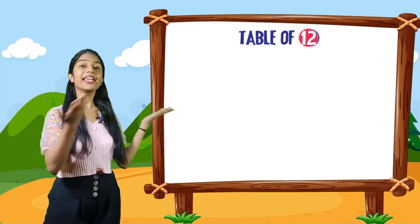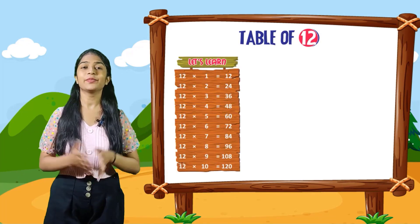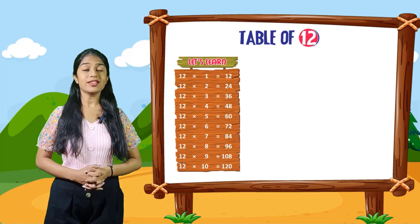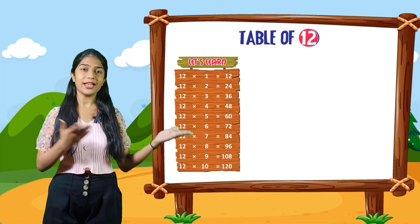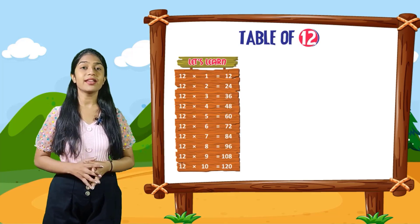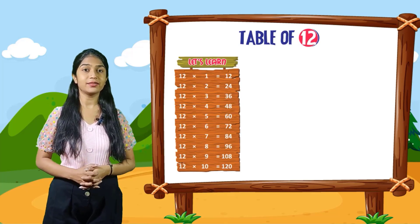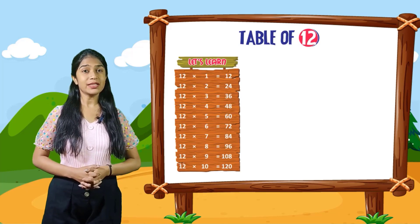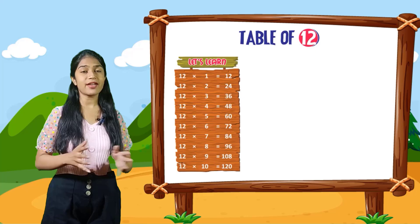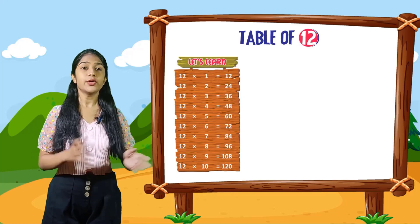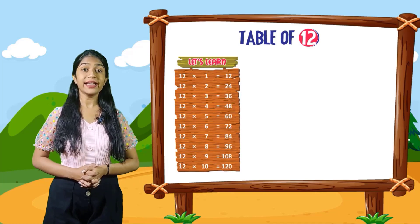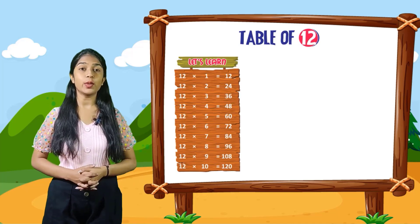So now let's start the table of 12. Let's learn. 12 into 1 is equal to 12. 12 into 2 is equal to 24. 12 into 3 is equal to 36. 12 into 4 is equal to 48. 12 into 5 is equal to 60. 12 into 6 is equal to 72. 12 into 7 is equal to 84. 12 into 8 is equal to 96. 12 into 9 is equal to 108. 12 into 10 is equal to 120.